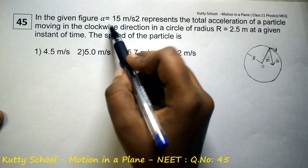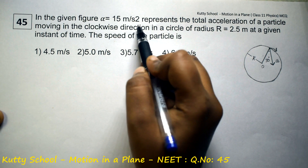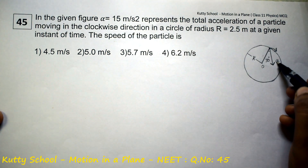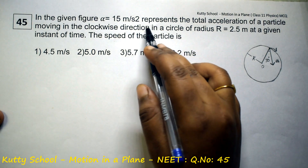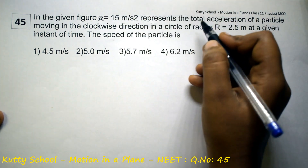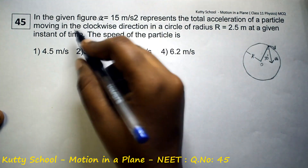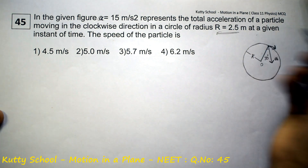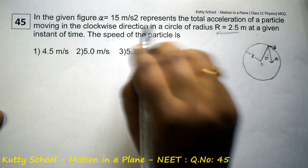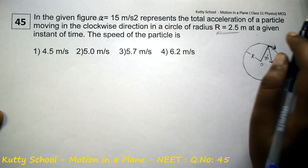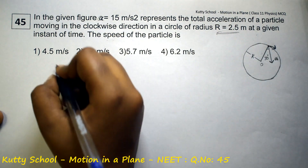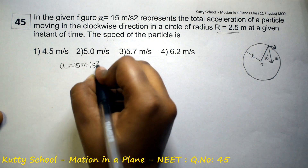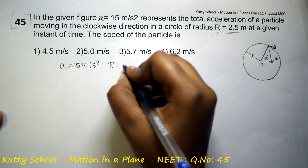In the given figure, alpha is equal to 15 meter per second square. Acceleration represents the total acceleration of a particle moving in a clockwise direction of radius 2.5 meter at a given instant of time. The speed of the particle is equal to 15 meter per second. Radius is equal to 2.5 meter.